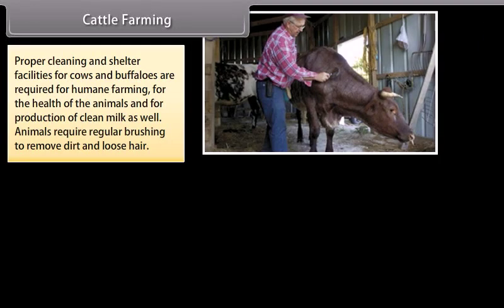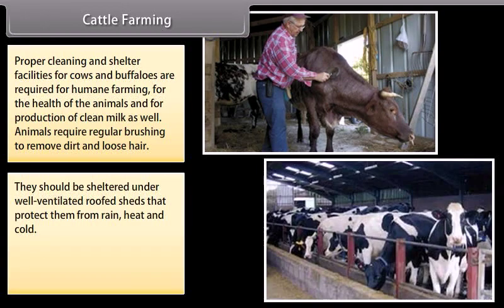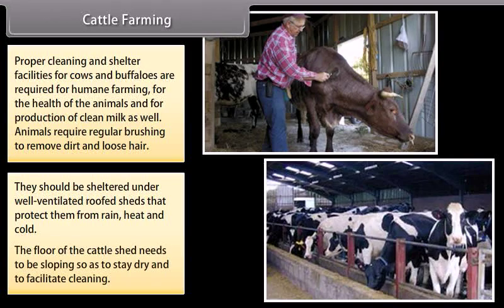Proper cleaning and shelter facilities for cows and buffaloes are required for humane farming, for the health of the animals, and for production of clean milk. Animals require regular brushing to remove dirt and loose hair. They should be sheltered under well-ventilated roofed sheds that protect them from rain, heat and cold. The floor of the cattle shed needs to be sloping so as to stay dry and to facilitate cleaning.